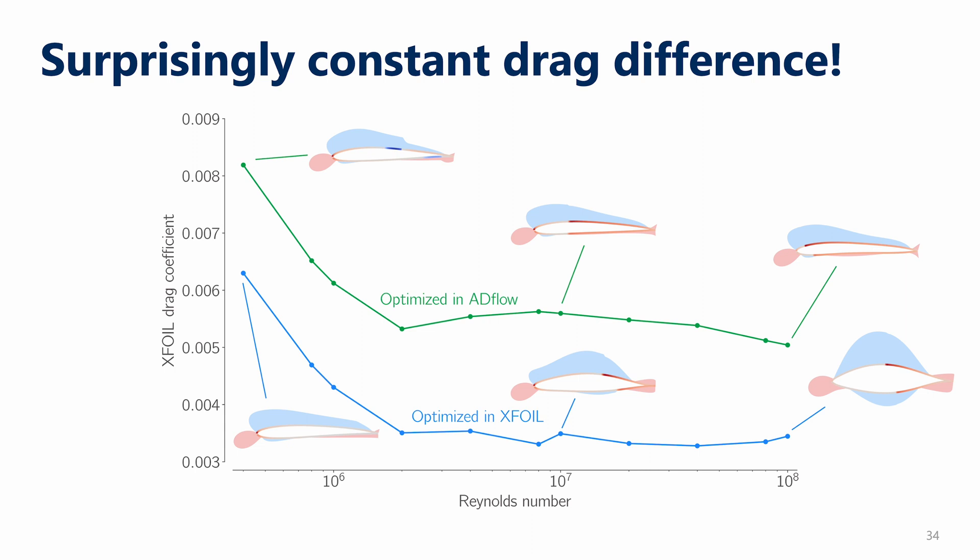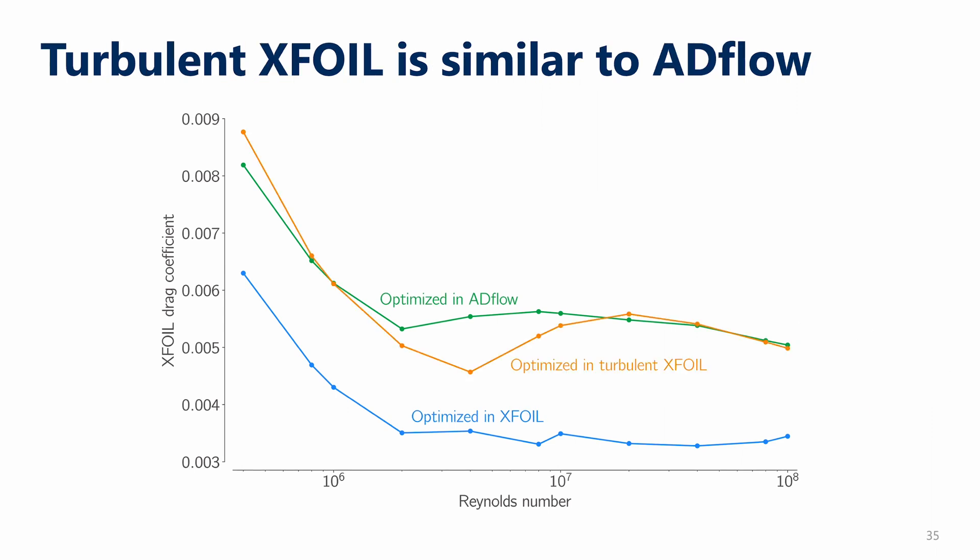Let's now look at the actual numerical drag values found by taking the optimized designs and analyzing them in XFOIL. There's a surprisingly constant difference between the drag coefficients from the ADFLOW design and the XFOIL design across the range of Reynolds numbers. At the lowest Reynolds number, this is because XFOIL can account for the laminar boundary layer which separates more easily than a turbulent one. At moderate Reynolds numbers, it can use the transition information to delay transition and reduce viscous drag. If we add in the turbulent XFOIL design, it lies almost entirely on top of the ADFLOW optimized drag coefficient, showing that transition is the dominant effect driving the difference. We do see some convergence at the highest Reynolds numbers, but that's above 100 million — maybe a really fast blimp.